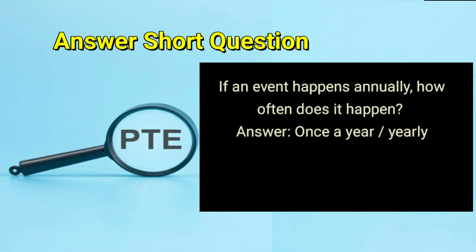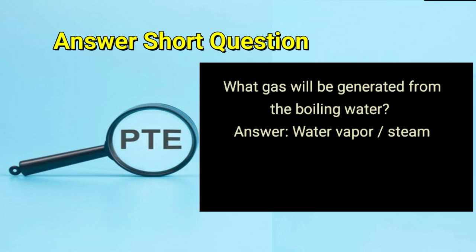If an event happens annually, how often does it happen? Answer: once a year, or yearly. What gas will be generated from the boiling water? Answer: water vapor or steam.